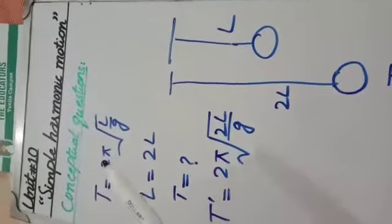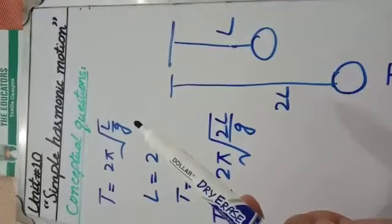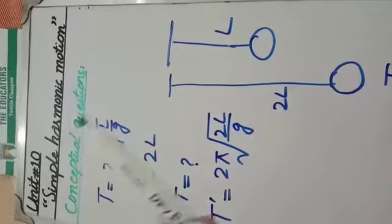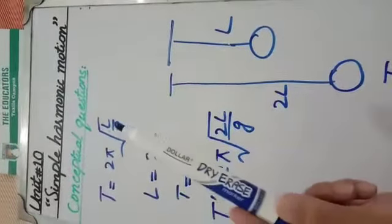First of all, the time period is T = 2π√(l/g). This is the simple pendulum's time period formula. We are saying that the length is doubled, that means 2l. We have to put 2l here.